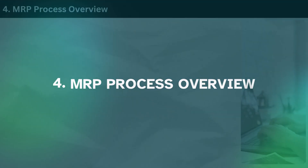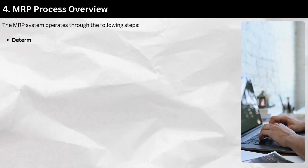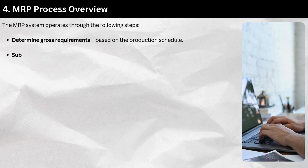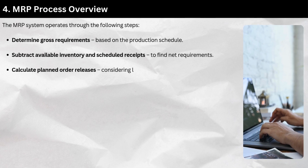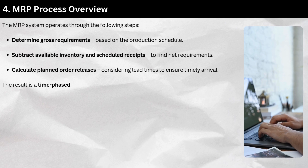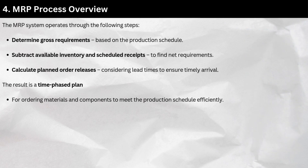MRP Process Overview. The MRP system operates through the following steps: determine gross requirements based on the production schedule; subtract available inventory and scheduled receipts to find net requirements; calculate planned order releases, considering lead times to ensure timely arrival. The result is a time-phased plan for ordering materials and components to meet the production schedule efficiently.